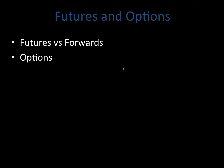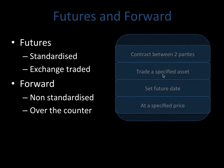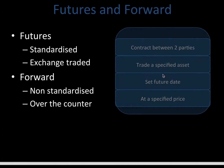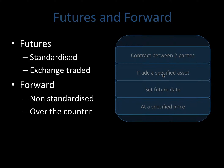What we are going to look at is: what are futures versus forwards, and then what is an option. A future and a forward are quite similar. The big difference being that a future is standardized and is traded on an exchange, whereas a forward is non-standardized and is traded over the counter. But both of these derivatives are contracts between two parties to trade a specific asset at a set future date at a specified price.